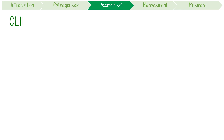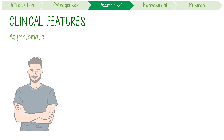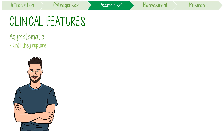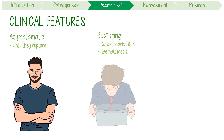Moving on to clinical features, the presentation of varices is most often asymptomatic — until they rupture. Rupturing causes life-threatening, catastrophic upper gastrointestinal bleeding in the form of hematemesis, or vomiting blood.